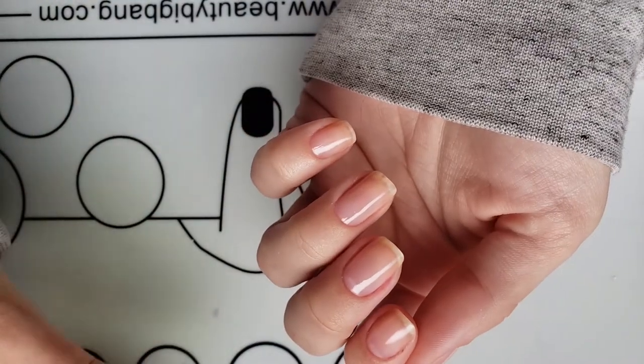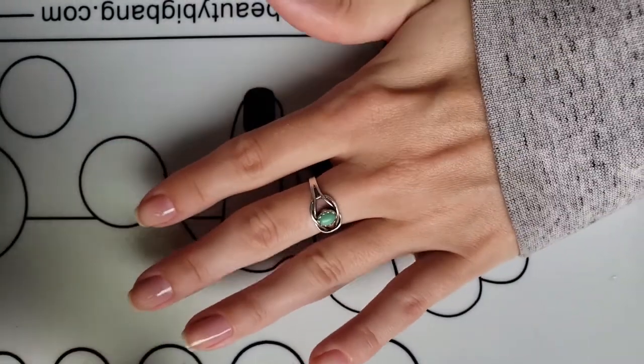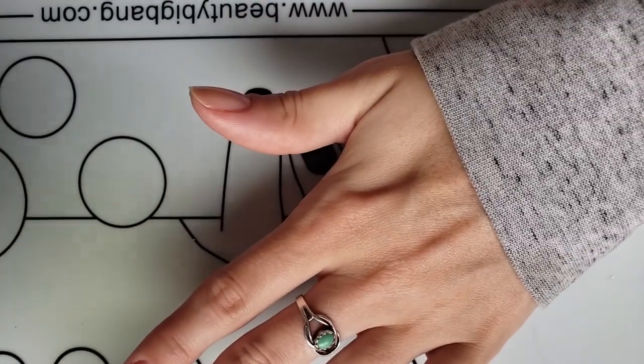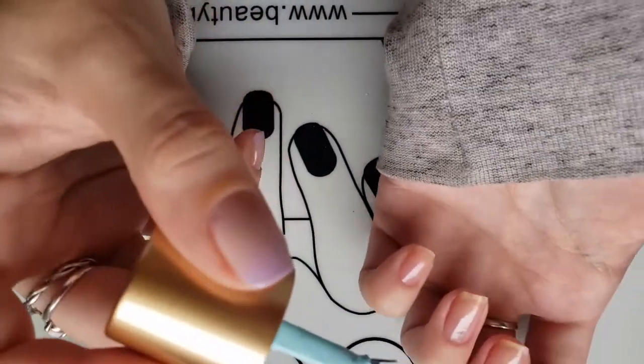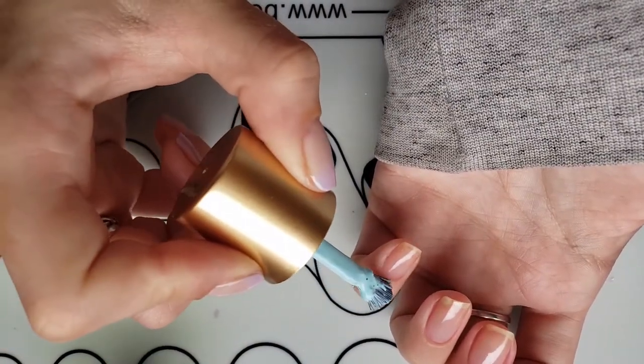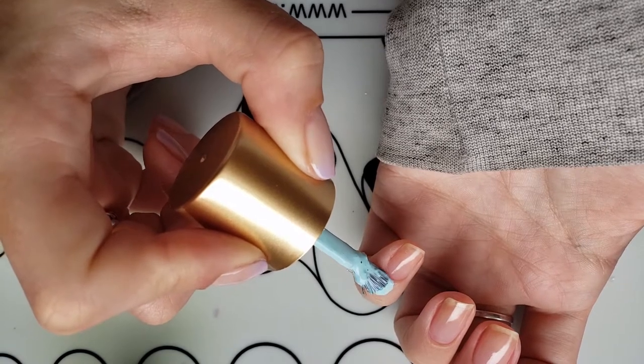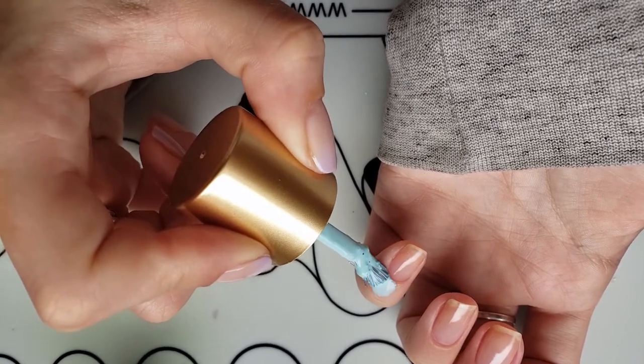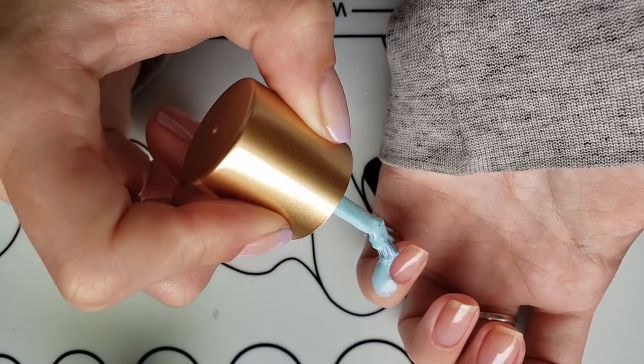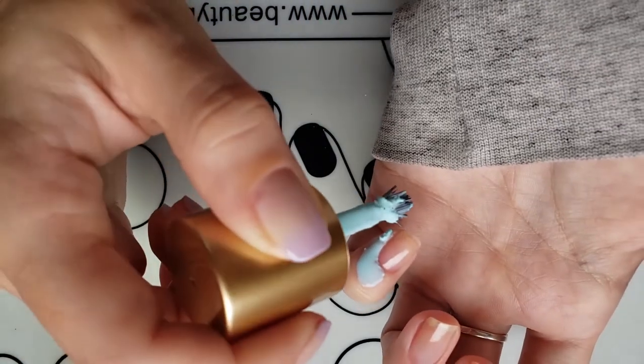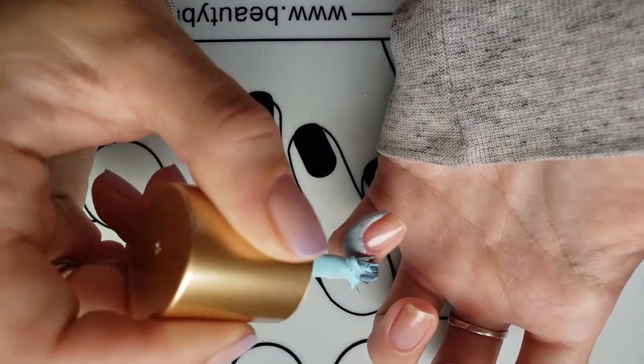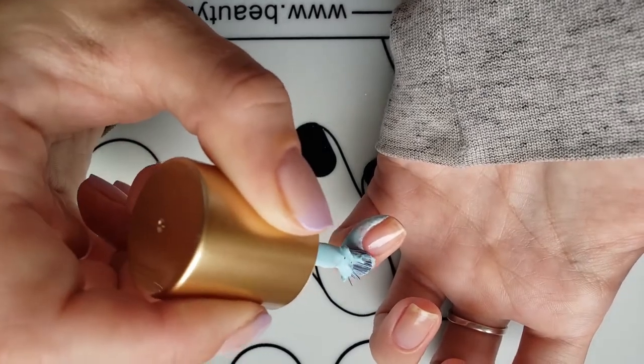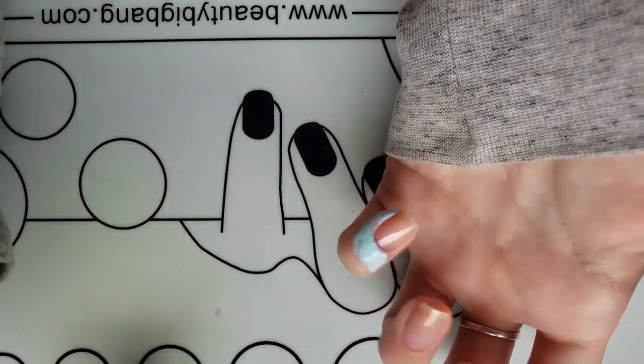But I would not recommend this brand of it. I really don't like it. It gets really goopy. The brush is crazy and it smells really bad. But I purchased it, so I'm going to go ahead and use it. And basically I'm just kind of covering all of my skin around my nail. And this is going to help protect when we sponge on the gradient so that I don't have a ton of cleanup.